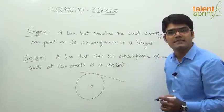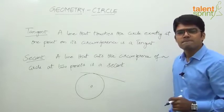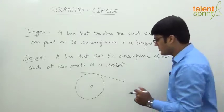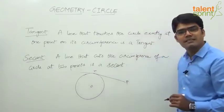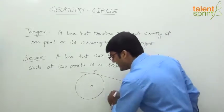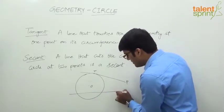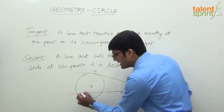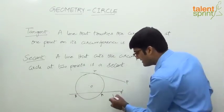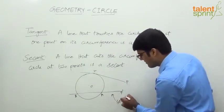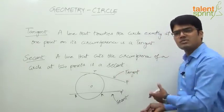This tangent touches only at one point, and that point is called the point of contact or point of tangency. The point at which the tangent touches the circumference is called the point of contact. If this is point P from which we have drawn a tangent, this is the point of contact P. A secant is a line that cuts the circle at two points — say P-dash cuts the circle at two points A and B, so PAB is called the secant.